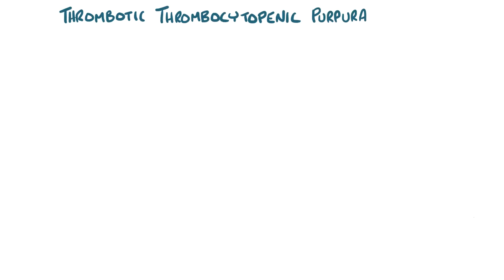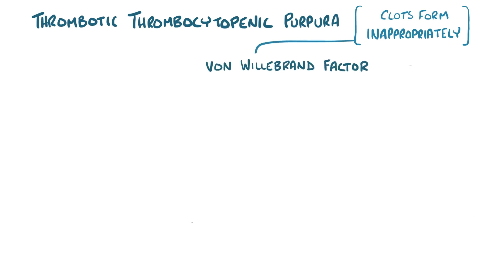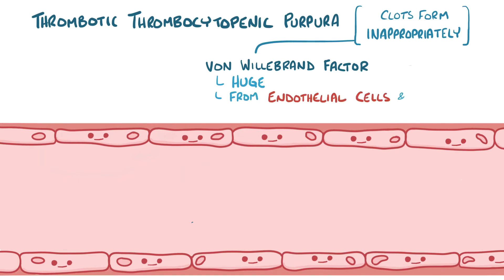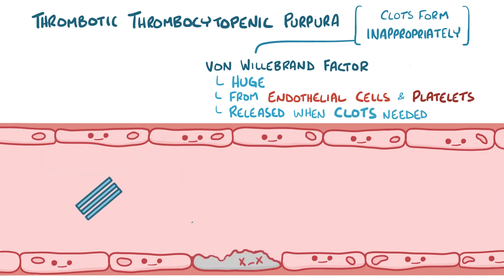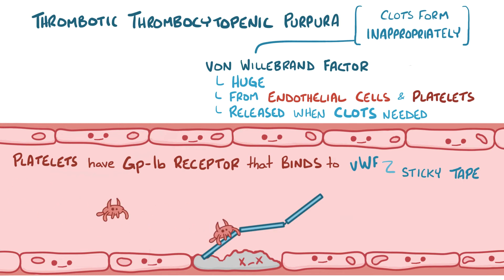Another way that clots form is through a condition called thrombotic thrombocytopenic purpura, or TTP. In TTP, clots start to form inappropriately, and the underlying reason has to do with a molecule called von Willebrand factor, or VWF, named after the Finnish doctor Erik von Willebrand. Von Willebrand factor is a huge protein made by the endothelial cells and platelets, released when it's time for platelets to stick together to form a clot. Platelets have a glycoprotein receptor on their surfaces called the GP1B receptor that binds with von Willebrand factor. You can think of von Willebrand factor as a very tiny piece of sticky tape that multiple platelets bind to and form a clot.